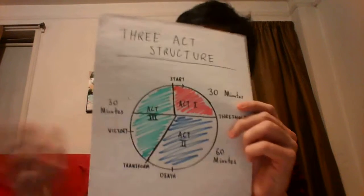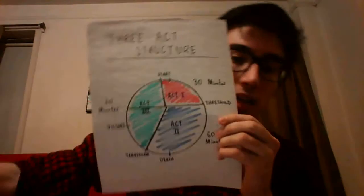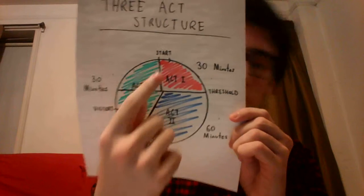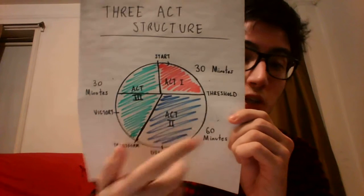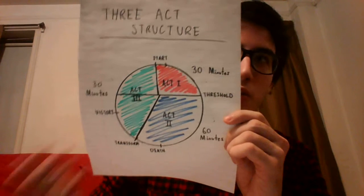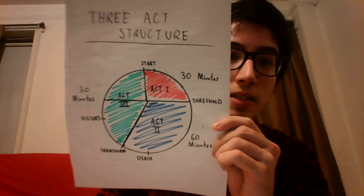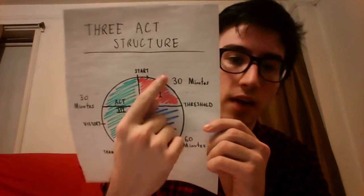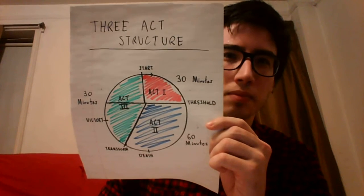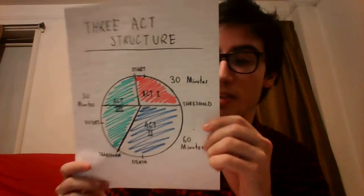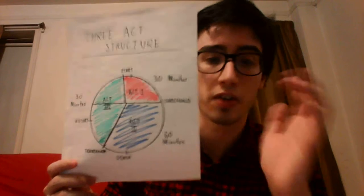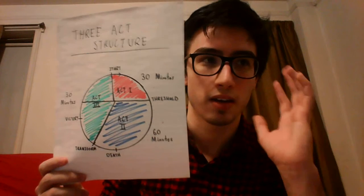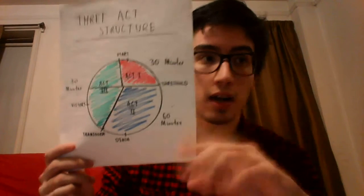Applying the three-act structure to the hero's journey looks like this for a typical movie. The first act takes us from the beginning to the hero crossing the threshold — the hero being pushed into the unfamiliar world. Once the story begins in earnest, that's the end of the first act, and this typically takes around 30 minutes. That's what you're told in screenwriting books — your first act should be 30 minutes and end with the hero pushed past that first point of no return.